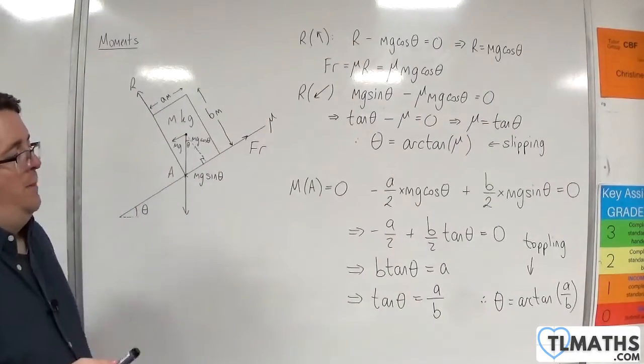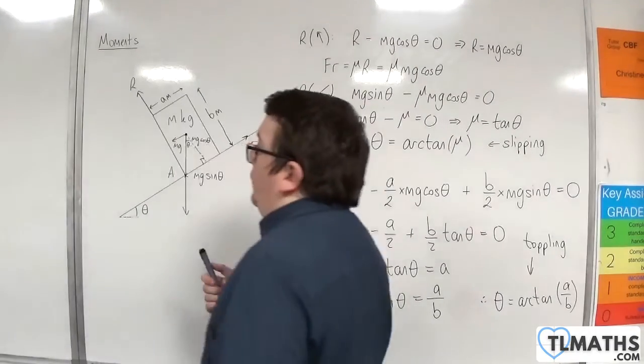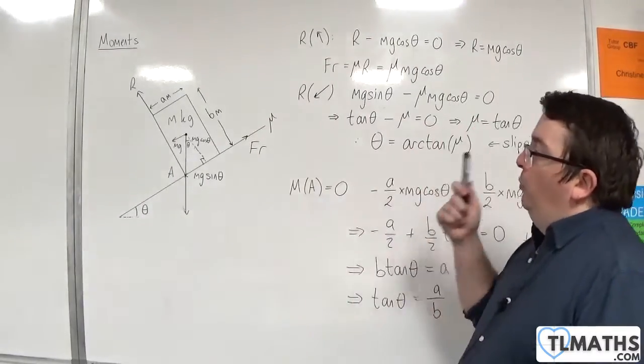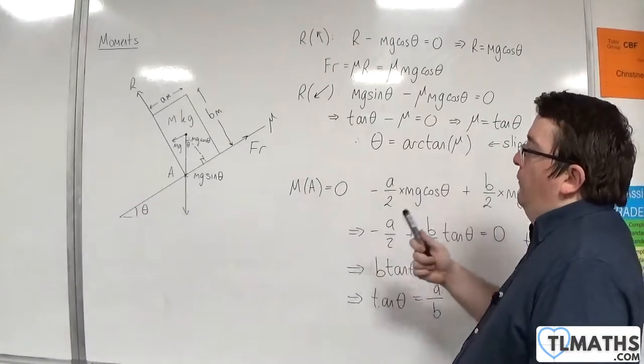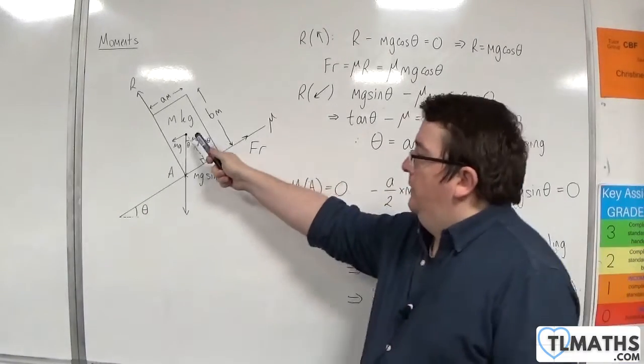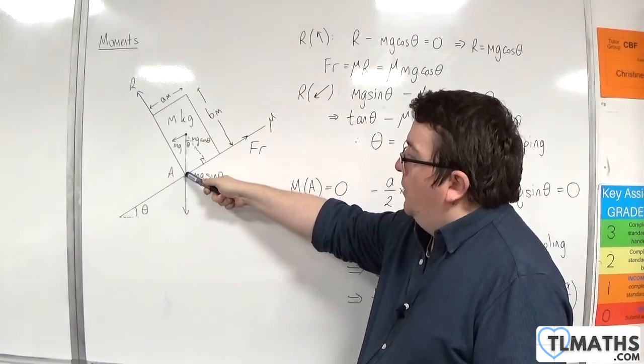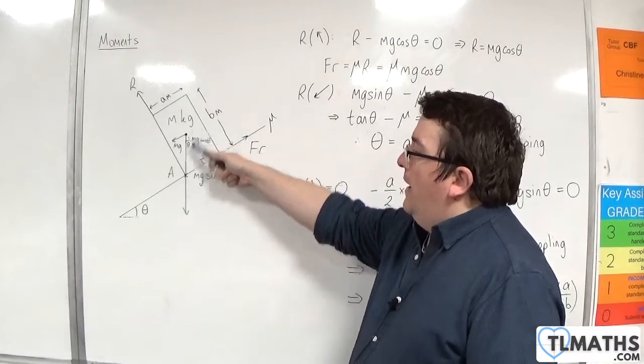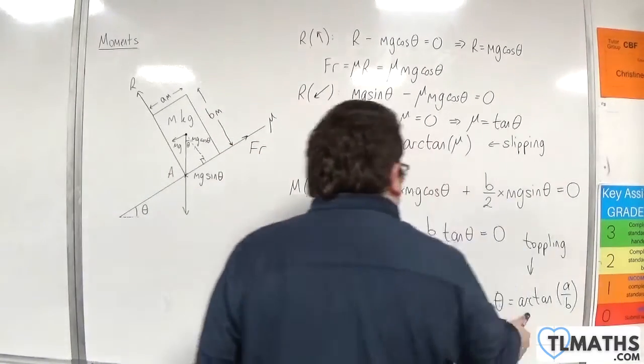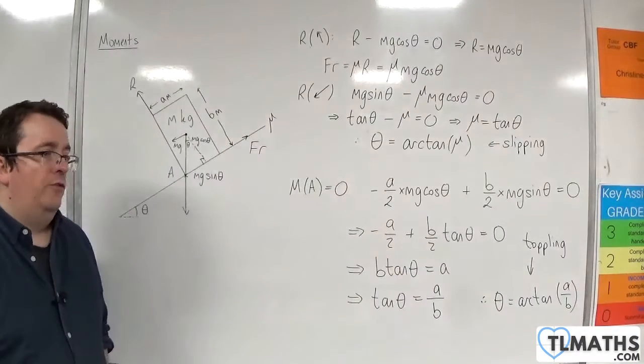And what's important about it is that the box will topple if the line of action from the center of mass passes through the lowest corner, and that will occur when theta is arctan of A over B.